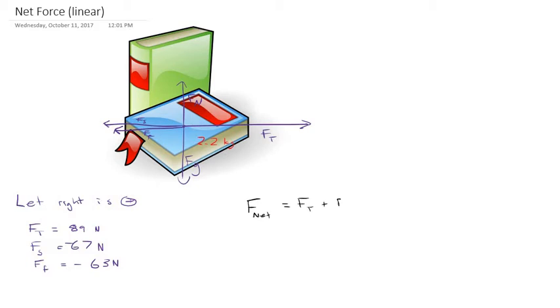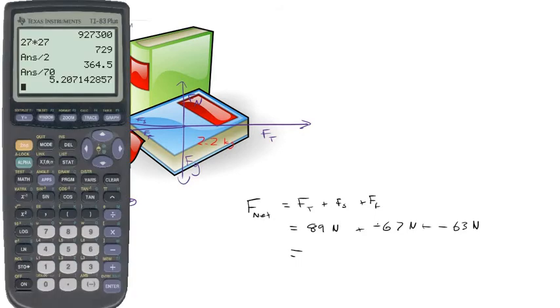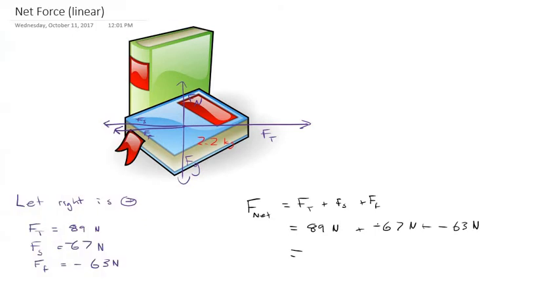To calculate that net side to side force, we're going to add up all the forces. That's the force of the teacher, the force of the student, and the force of the friend. The force of the teacher was 89 newtons, the force of the student was negative 67 newtons, and the force of the friend was negative 63 newtons.